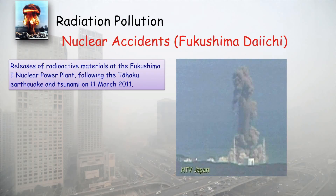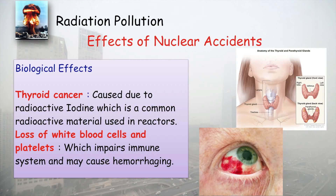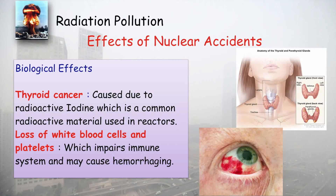The effects of nuclear accidents include: release of radioactive material into the atmosphere, which can cause thyroid cancer due to radioactive iodine — a common material used in reactors. It also causes loss of white blood cells and platelets, impairing the immune system. This may cause hemorrhaging, meaning blood leaking inside the vessels or veins.